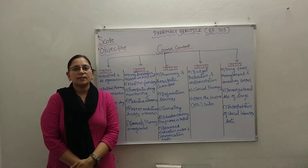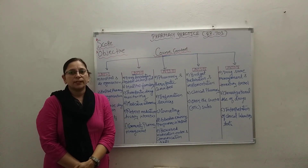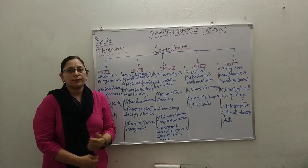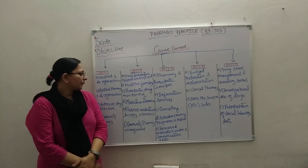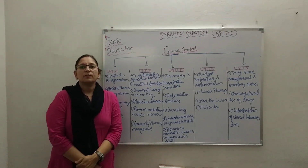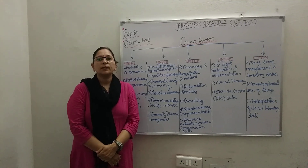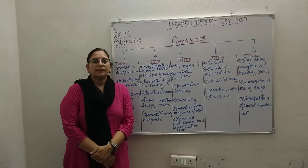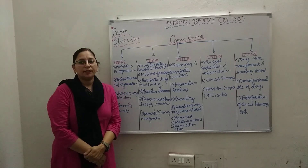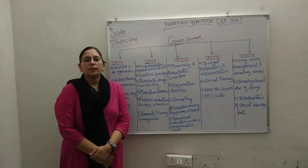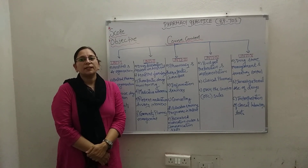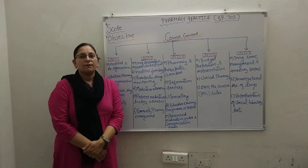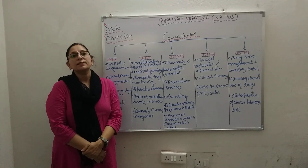The third part of Unit 2 is therapeutic drug monitoring, covering the need for therapeutic drug monitoring, factors to be considered, and the Indian scenario. The fourth part is medication adherence, including causes of medication non-adherence, the pharmacist's role in medication adherence, and monitoring of patient medication adherence. The fifth part is patient medication history interview, covering the need for the patient medication history interview and medication interview forms. The sixth and last part is community pharmacy management, covering financial, materials, staff, and infrastructure requirements.